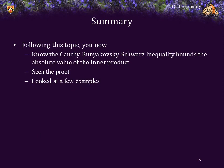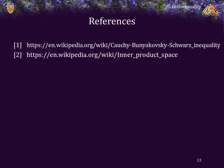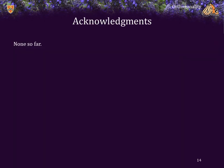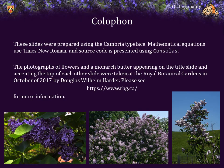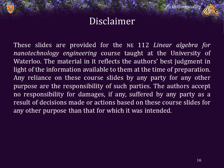Following this topic, you now know the Cauchy-Bunyakovsky-Schwarz inequality, which bounds the absolute value of the inner product to being no greater than the product of the two norms of the two arguments. We have seen the proof and stepped through it carefully, and we have looked at a number of examples. Cheers!